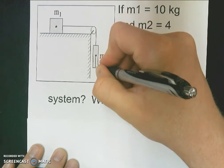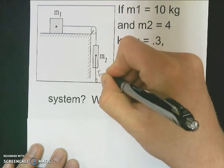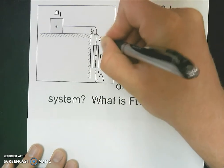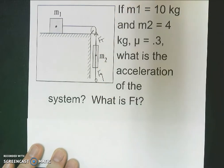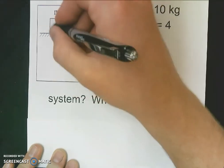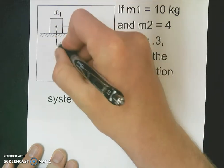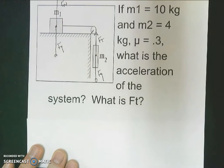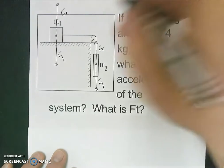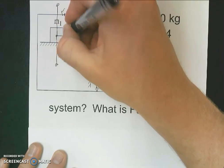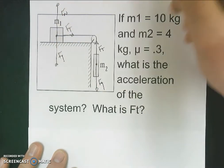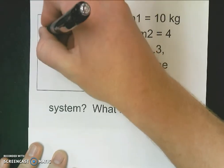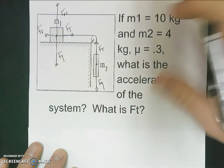Mass two is going to have the force of gravity acting on it, and it's also going to have the force of tension of the string. We know these aren't going to be equal. Mass one, the larger mass, has the force of gravity on it, also has force normal because it's sitting on a table. We also know that there is a force of tension because of the string, and we're told there's a coefficient of friction, so we know that there's also a force of friction acting on the block.